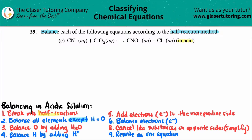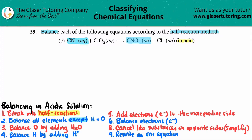The first thing we have to do is break into half reactions. What that means is you just have to match certain elements on the left side and the right side. When we break into half reactions, we should have two reactions where elements go together. Since this compound has a carbon and a nitrogen, I'm going to link it up with the one that has carbon and nitrogen. Then I have a chlorine on this side and a chlorine on this side, so that links up.